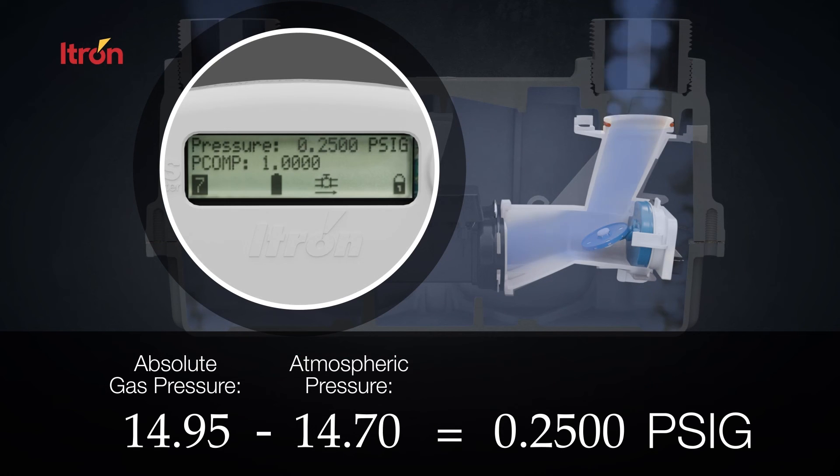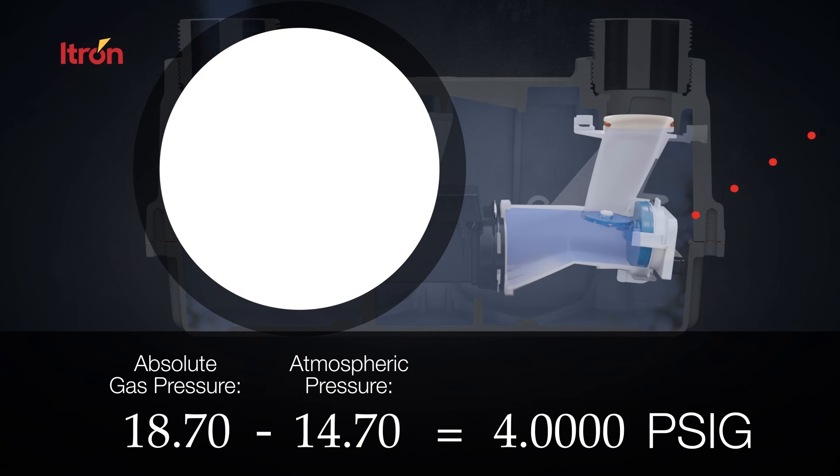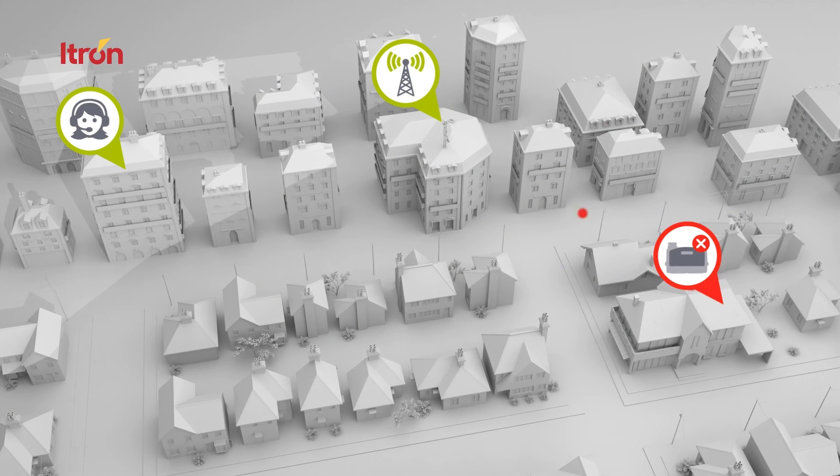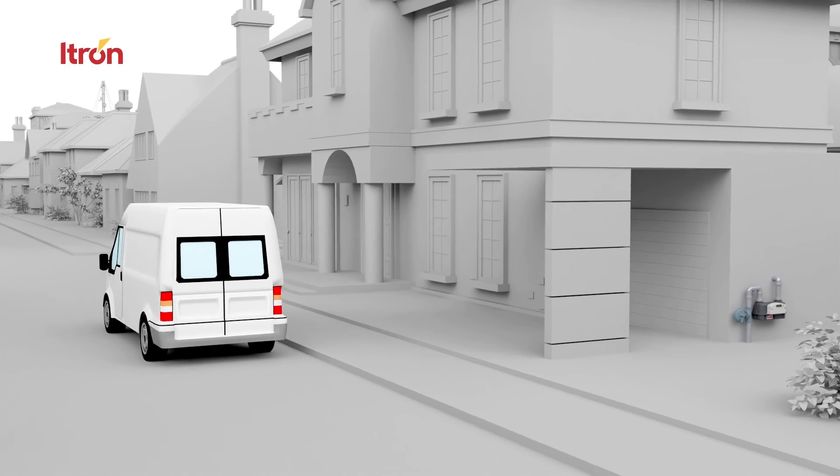The meter calculates the gauge pressure of the gas flowing through the meter. The meter will automatically close the valve, shutting off gas flow once a utility configurable high pressure limit is reached. Additionally, in network mode, as soon as a high pressure or low pressure threshold is reached, an alarm is sent to the head end.